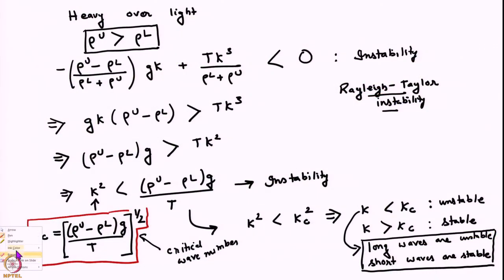There are two energies associated here: gravitational potential energy and surface energy. Whenever we have a flat interface and we introduce a perturbation in the form of a Fourier mode, whether the base state will be stable depends on whether the net energy in the perturbed state is more or less. If the perturbation increases the potential energy of the system, the system does not like to be in that configuration and wants to return to the base state where the potential energy is less.